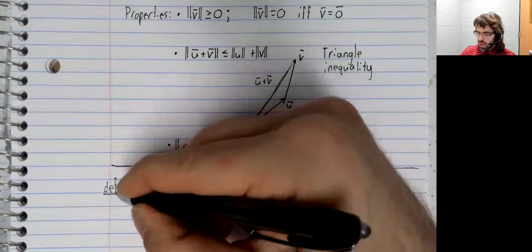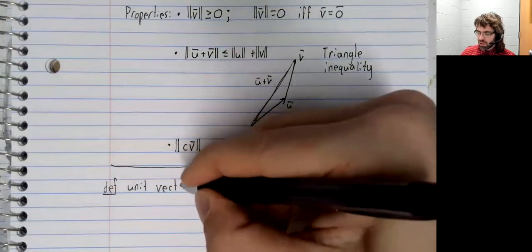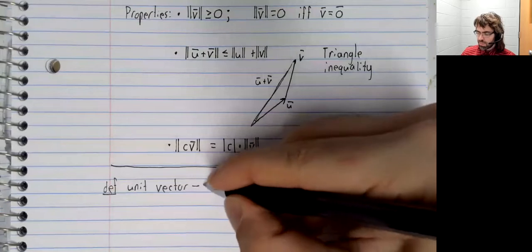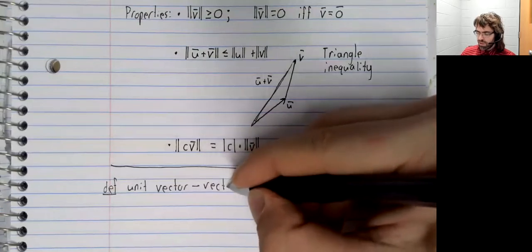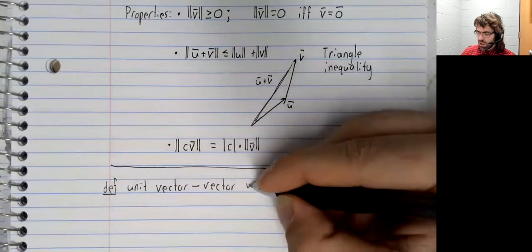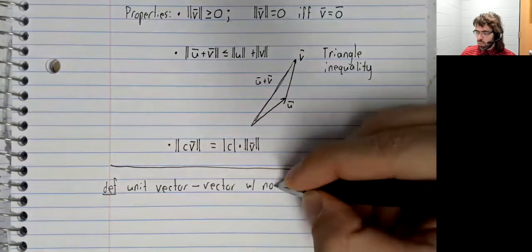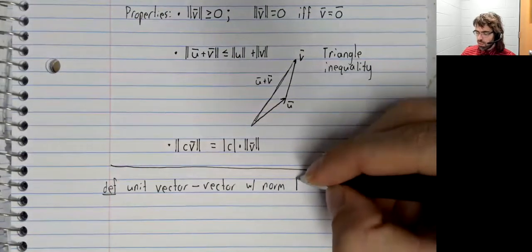A unit vector is a vector with norm one.